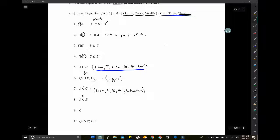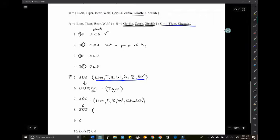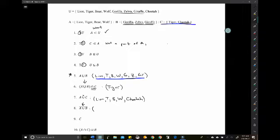Not A union B. So the complement. Basically, look at five, Lion, Tiger, Bear, Wolf, all that, and compare to the universe, and whatever is not included would go here. So not A union B. Let's just look. So Lion, Tiger, Bear, Wolf, Gorilla, Zebra, Giraffe. So the only thing that's not included is Cheetah.